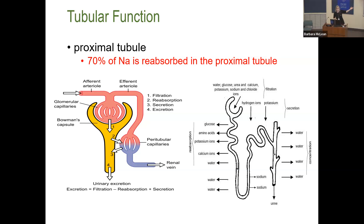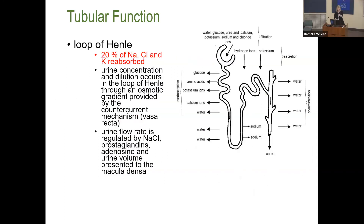In the proximal tubule — closest to the glomerulus — you reabsorb the majority of water and sodium. At the loop of Henle, 20% of your sodium, chloride, potassium, and other ions are reabsorbed into the blood from the filtrate using oxygen — that's the countercurrent mechanism. All ions at the loop of Henle — sodium, potassium, magnesium, phosphorus, and calcium — are reabsorbed into the blood with the power of oxygen.